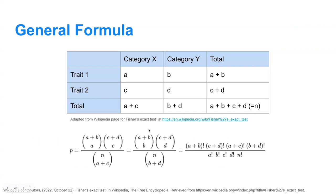In order to actually calculate the probability or the statistic for Fisher's exact test, there is a handy formula that looks complicated but we'll simplify it down. There will be a more relevant example that I'll run through this whole process with.